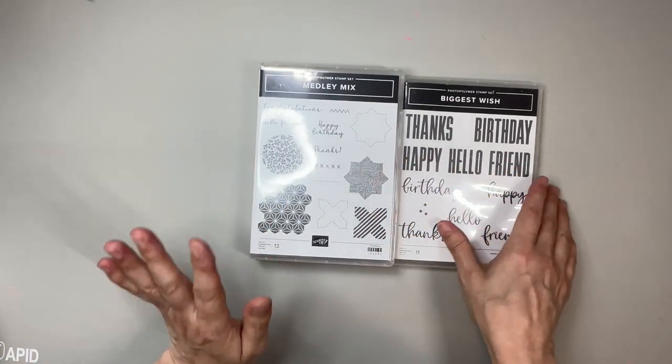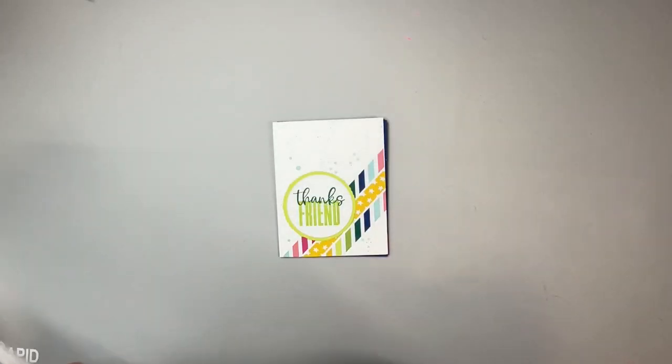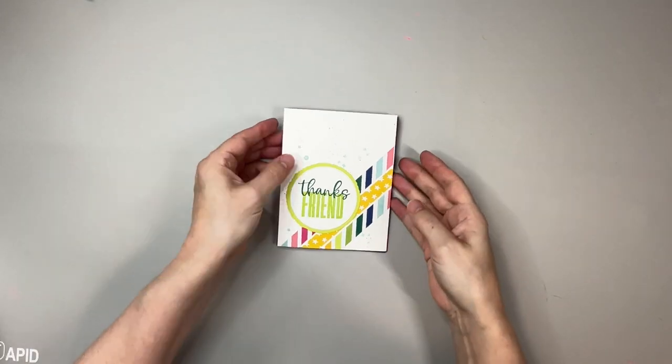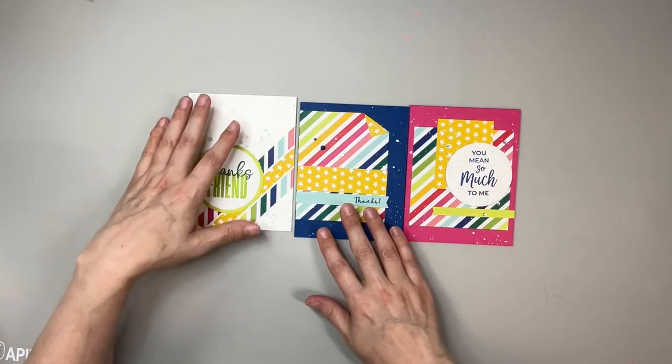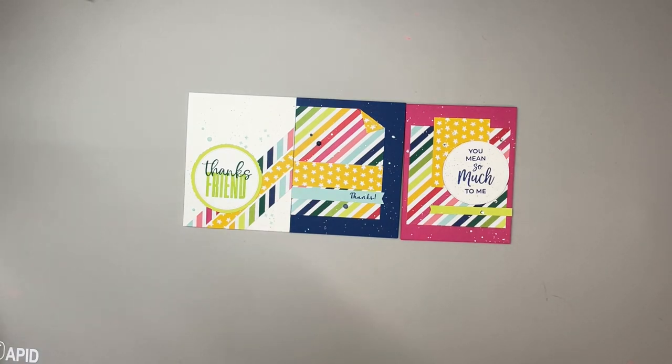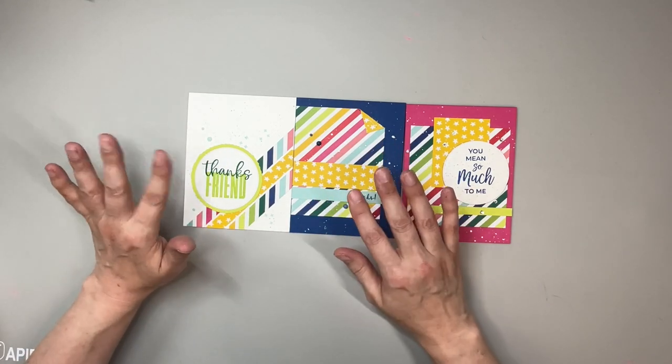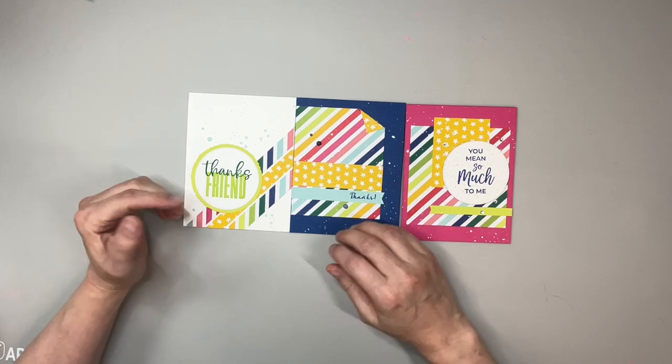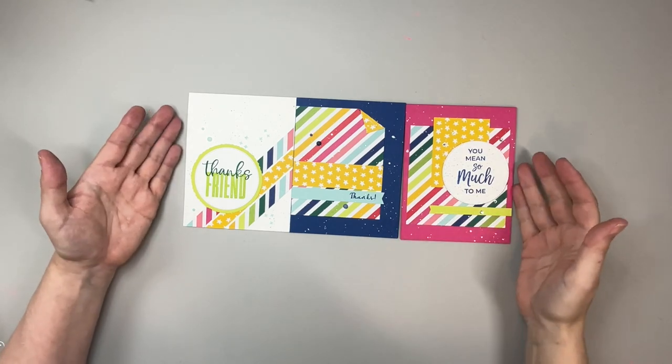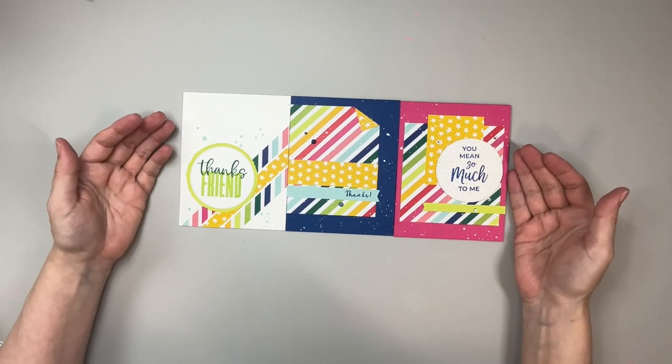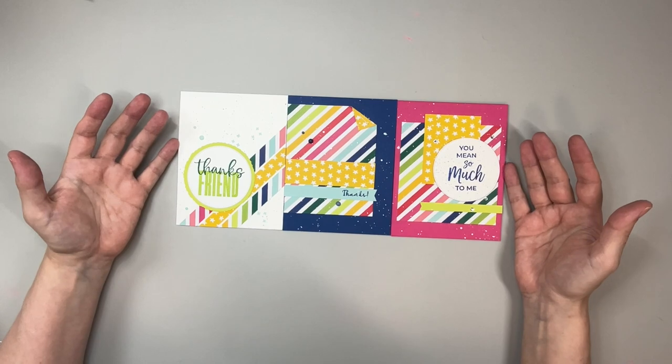For the paper, we're actually using one of the Christmas papers, and this shows you how extremely versatile our DSP can be. This is the Merry Bold and Bright paper. The suite comes with obviously the paper and it comes with stamps and dies. Super fun! I love non-traditional Christmas colors. I thought it would be fun to pair it up with some of our brighter colors. These are the cards that we're going to make today.